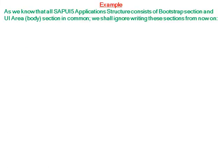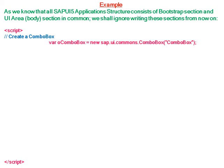Let's see an example. As we know, all SAPUI5 application structures consist of a bootstrap section and a UI area (body section). We shall ignore writing these sections from now on and go directly to the second script block of the SAPUI5 application structure, where we define the UI elements we need for our application. So we are creating a combo box — new sap.ui.commons.ComboBox is the constructor — and the name of our combo box is oComboBox.